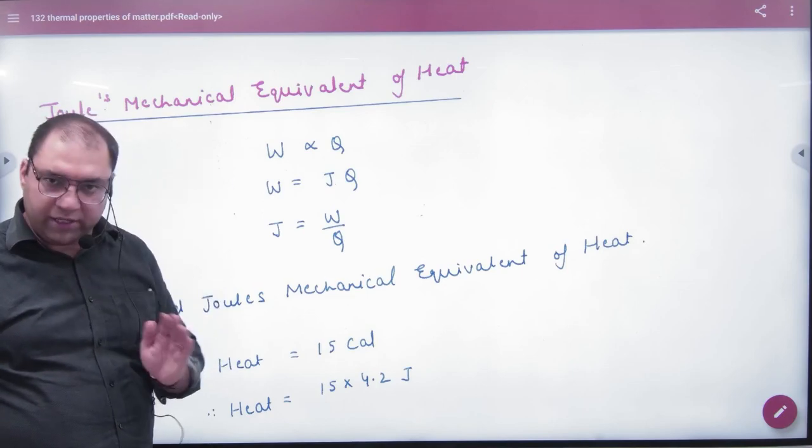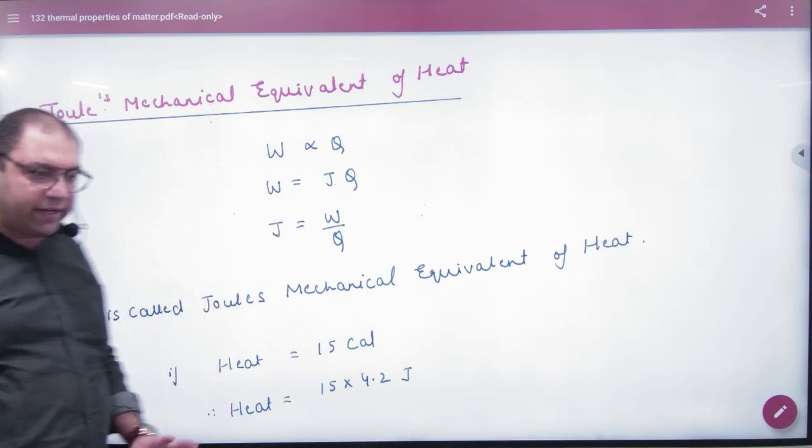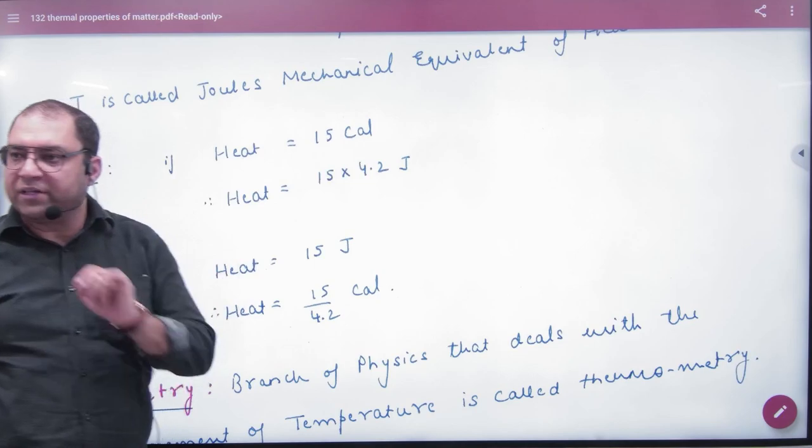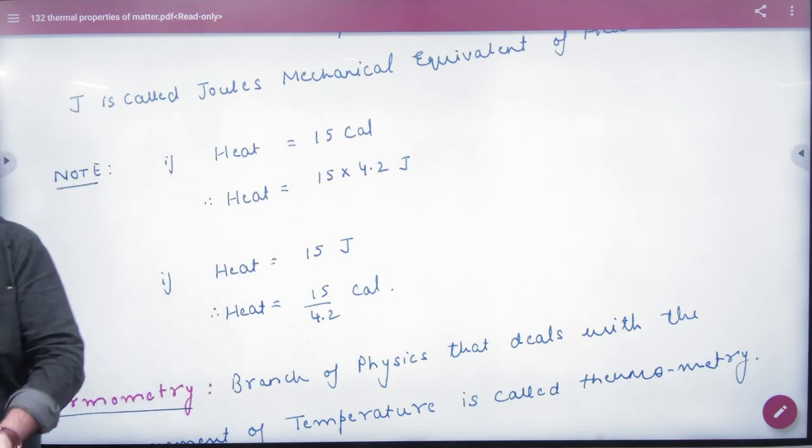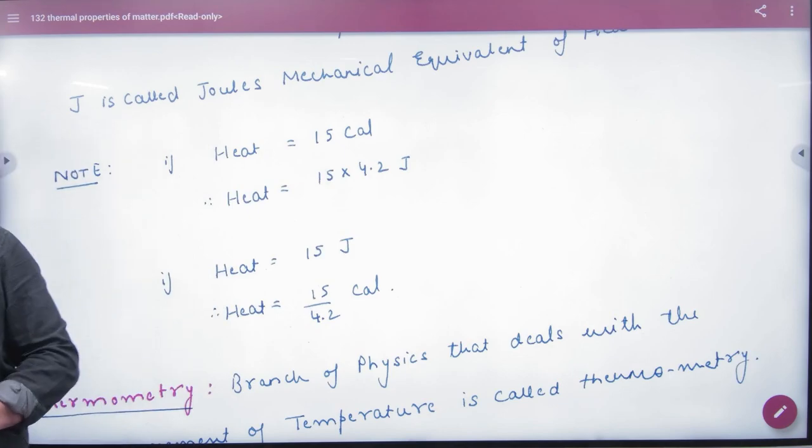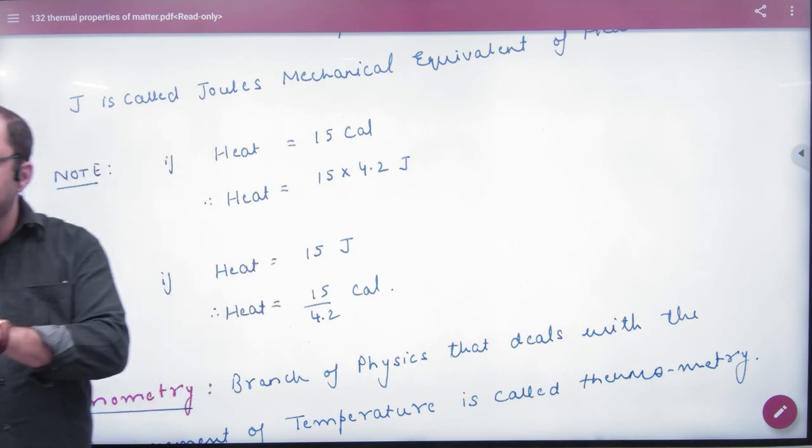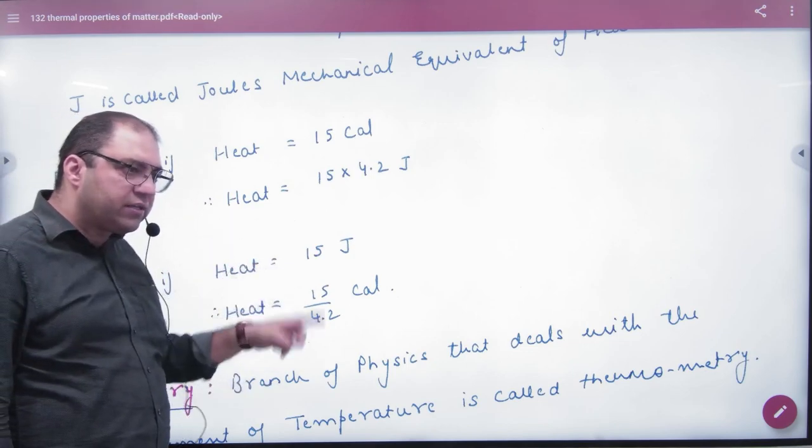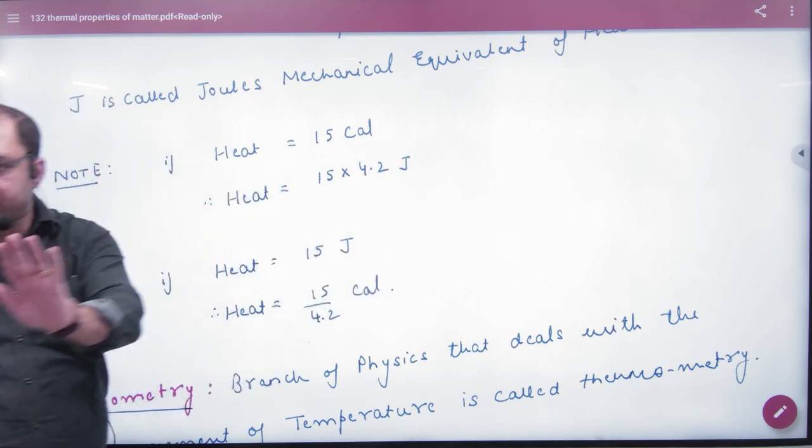If you look at the example, if you have heat of 15 calories and you have to convert into joules, multiply it by 4.2. But if you have heat of 15 joules and you have to convert into calories, divide it by 4.2. The answer will come in calories.